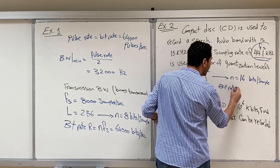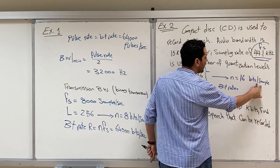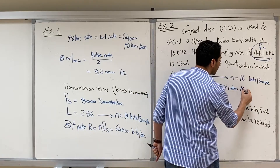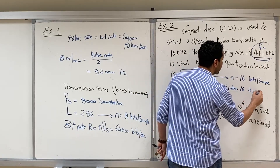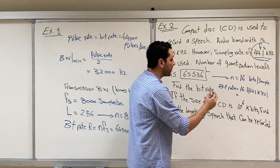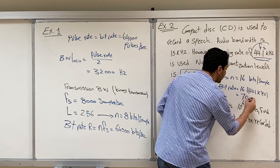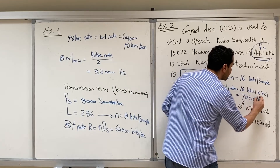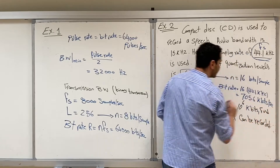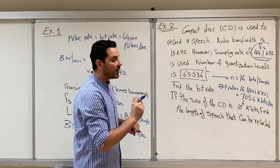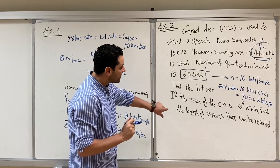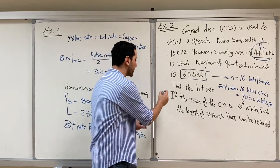To find the bit rate, we multiply bits per sample by samples per second: 16 bits per sample times 44.1 kHz gives a bit rate of 705.6 kilobits per second.